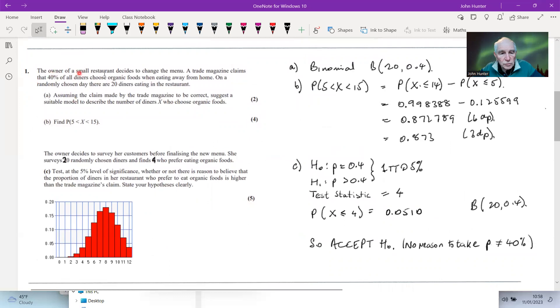So let's just move on to this example, which is the owner of a small restaurant decides to change the menu. Trade magazine claims that 40% of diners choose organic foods when eating away from home. On a randomly chosen day, there are 20 diners eating in a restaurant. Assuming the claim to be made by trade magazine to be correct, suggests a suitable model to describe the number of diners X who choose organic, and then to calculate its probability. Yeah, we're looking at binomial. It's 40%. You see this quite a lot, where really it's kind of this 0.4 in disguise. So just watch out for that. But obviously 20 in the group, in the trial size.